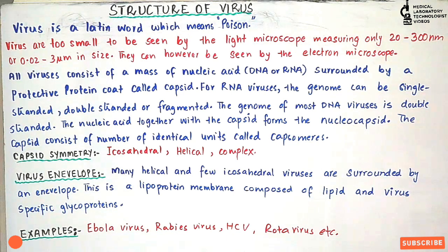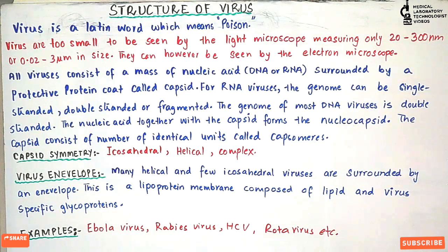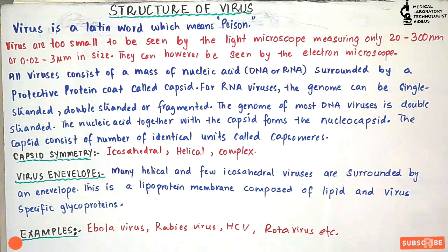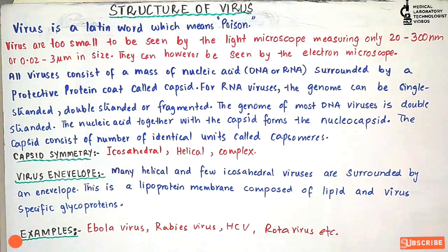The genome of DNA viruses is mostly double-stranded. The nucleic acid together with the capsid forms the nucleocapsid. The capsid is antigenic and also contains receptors which enable the virus to attach to the surface of its specific host cells.